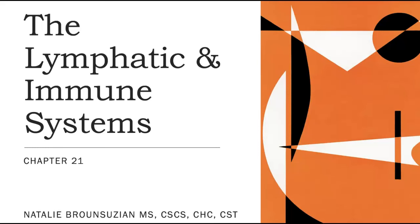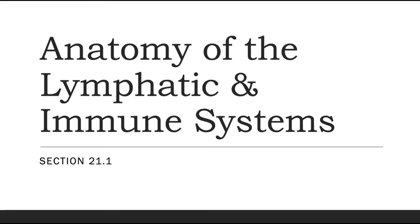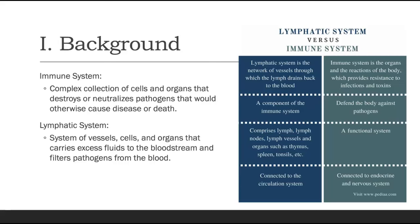Hello and welcome to your lecture on the lymphatic and immune systems, which is chapter 21. We are going to start off with section 1 on the anatomy of the lymphatic and immune systems. Our immune system is this complex collection of cells and organs that work to destroy and neutralize pathogens that enter our body that could cause disease or death.